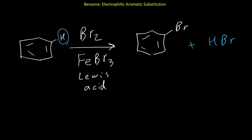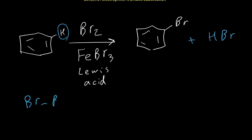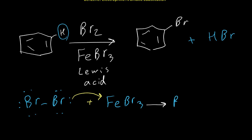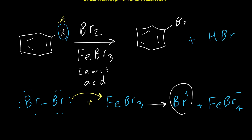Let's see how the electrophile is formed. The bromine molecule has three lone pairs on each bromine. FeBr3 can undergo a Lewis acid-base reaction with bromine, producing Br+ plus FeBr4−. This is the role of the catalyst: it breaks the Br2 molecule and produces a bromine cation as the electrophile. This Br+ then reacts with the benzene ring, and at the end of the reaction the hydrogen combines with the negative bromine to produce HBr.